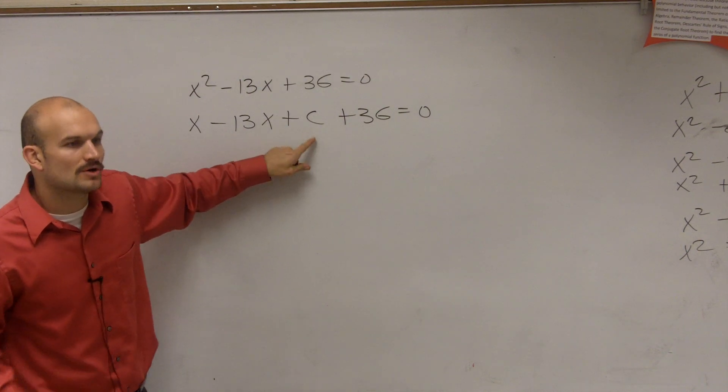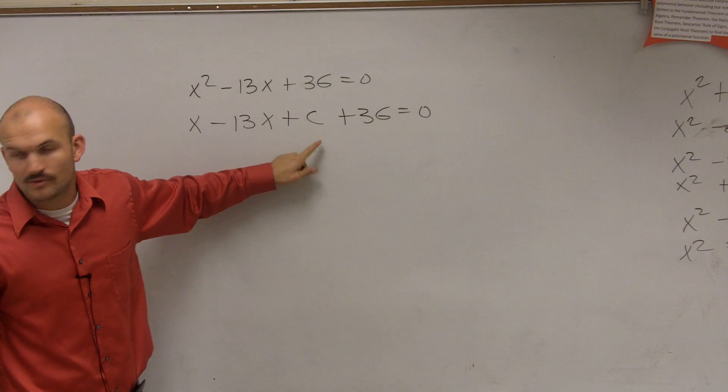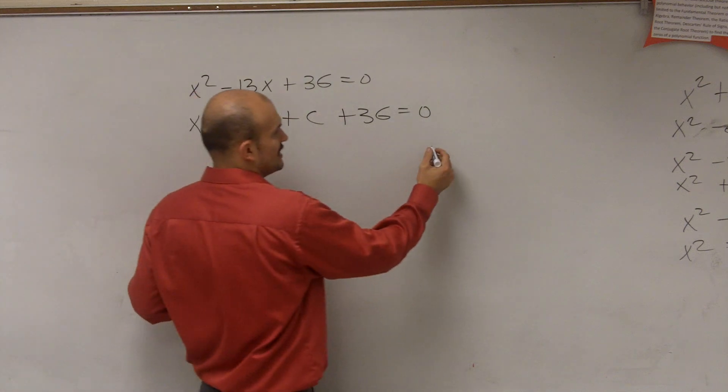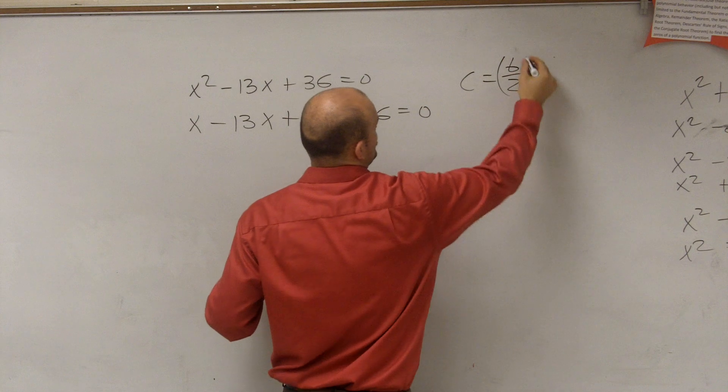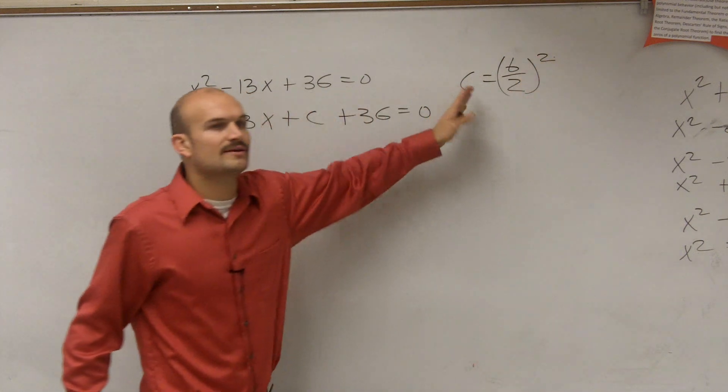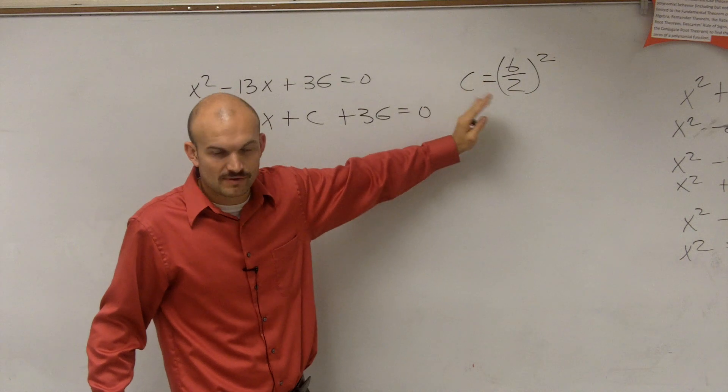And if you guys remember, we worked on finding that value c. The value of c in our problem was c equals b divided by 2 squared. That's how we could find the perfect square trinomial. This is only for a perfect square trinomial.